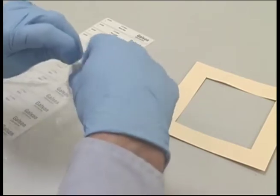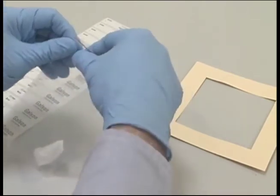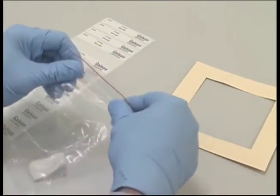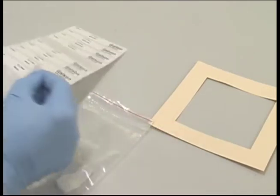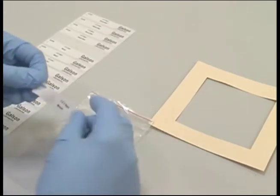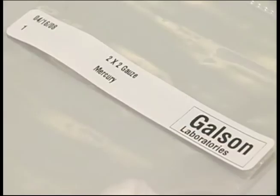After you have completed the sample collection, fold the wipe sample with soiled side facing in and place it into the supplied collection vial or ziplock bag. Identify the sample by placing a Galson-provided label or equivalent on the outside of the vial or ziplock bag.